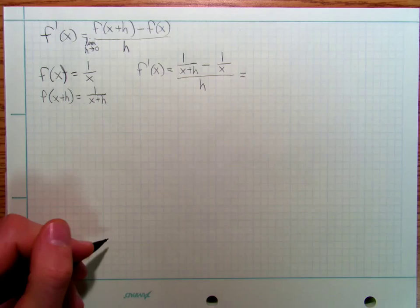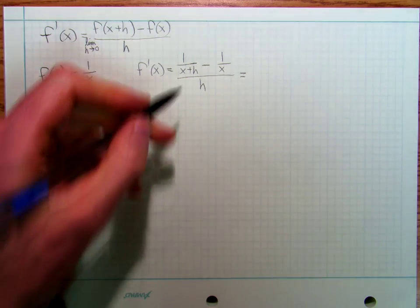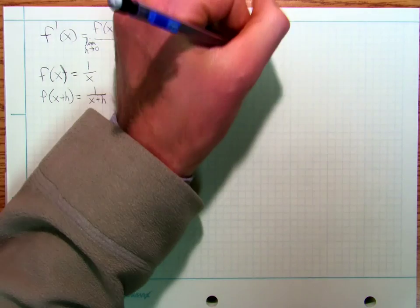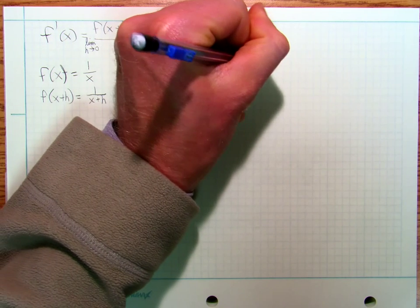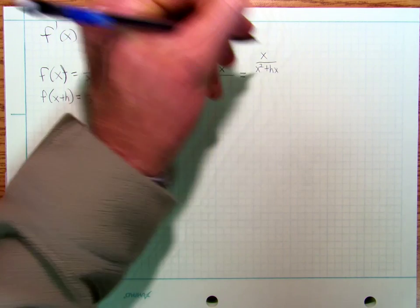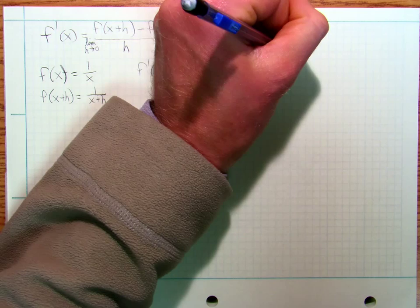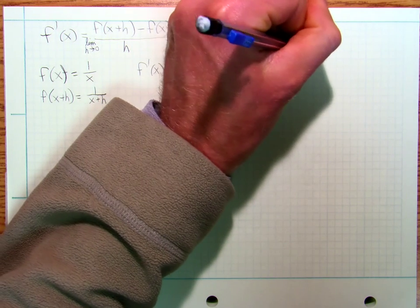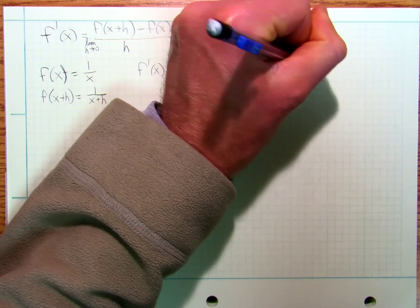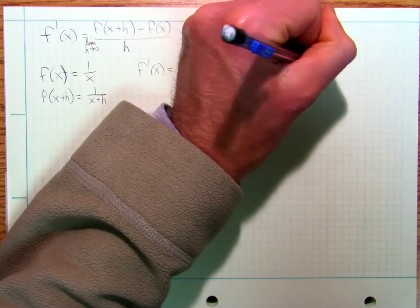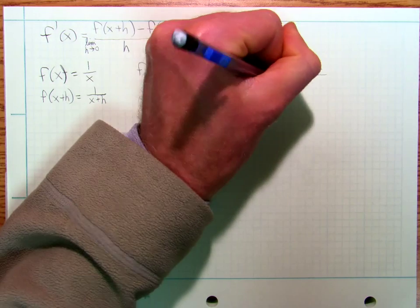So I'm going to rewrite this as x over x squared plus hx minus x plus h over x squared plus hx, all of that over h.